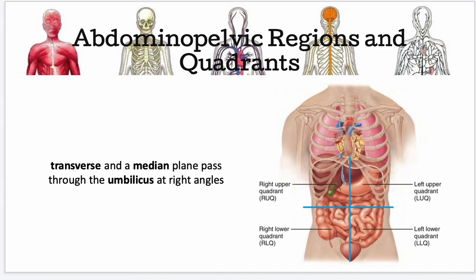Now for abdominal pelvic regions and quadrants. A transverse and median plane pass through the umbilicus at right angles, forming four quadrants used to identify abdominal pelvic regions. This is very important — even as a physician, we utilize these quadrants to localize pain. The four quadrants are: right upper quadrant, left upper quadrant, left lower quadrant, and right lower quadrant.